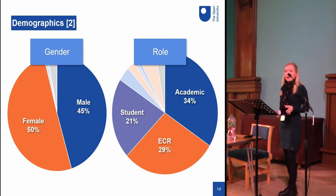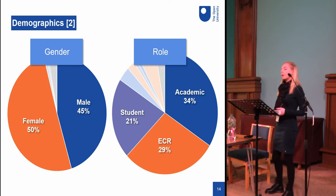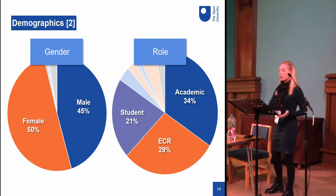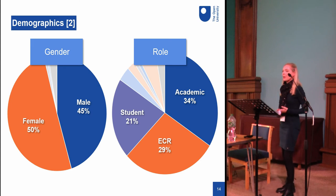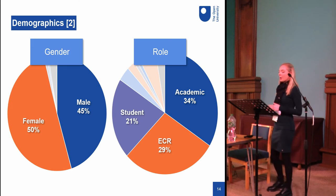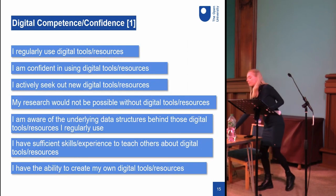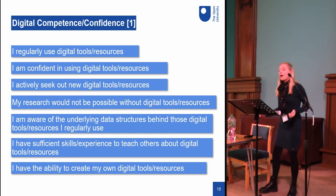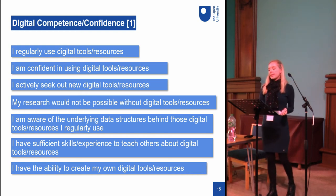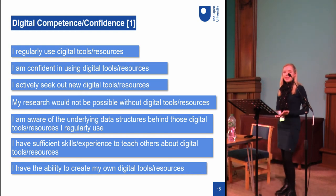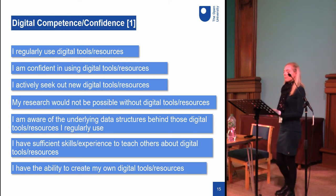The vast majority — about 84 percent of participants — were involved with a university in some way, either as an academic, a researcher, or as a student. I was hoping to have more cultural heritage participants, but perhaps it's interesting in itself that they didn't necessarily think of themselves as researchers. I also wanted to gauge participants' levels of digital competence, which I achieved by asking them to state their level of agreement with a series of statements.